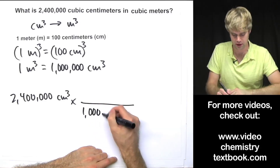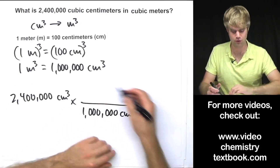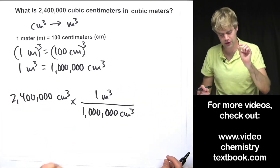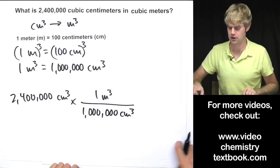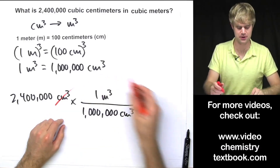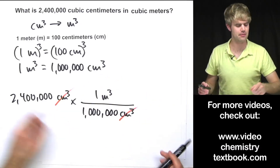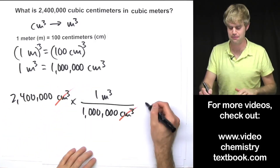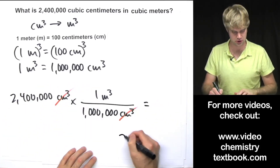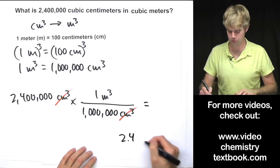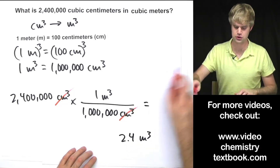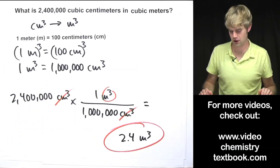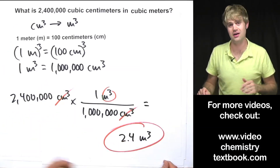So the conversion factor is going to put cubic centimeters on the bottom: 1,000,000 cubic centimeters on the bottom and 1 cubic meter on the top, telling us that for every 1 cubic meter we have, we have 1,000,000 cubic centimeters. With cubic centimeters canceling, 2,400,000 times 1 divided by 1,000,000 gives us 2.4 cubic meters. So a whole bunch of cubic centimeters is not that much in cubic meters.